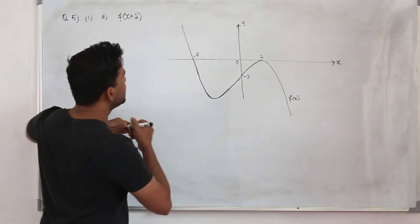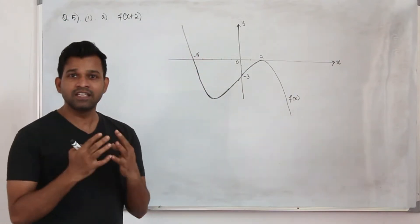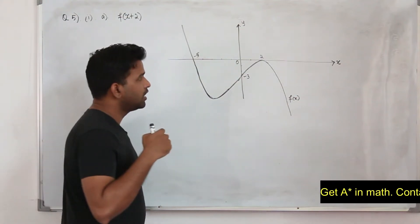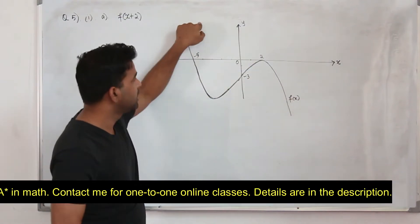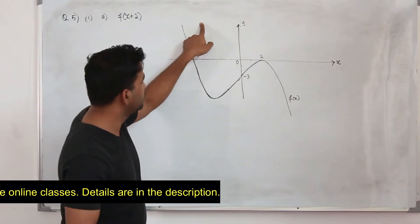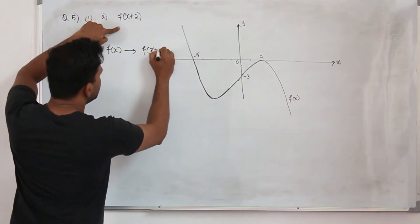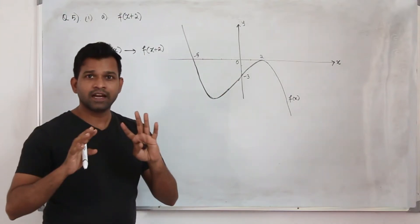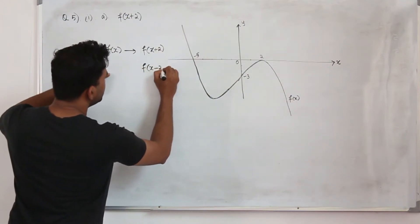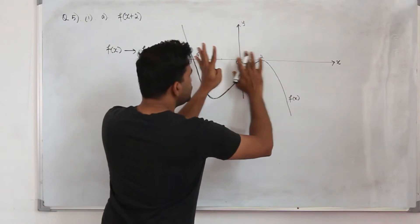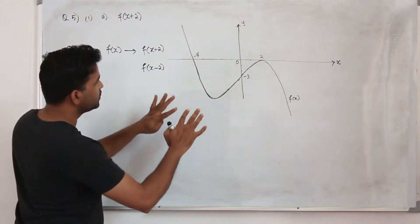You are given this cubic curve. In part A they want you to sketch f of x plus 2. This is f of x. If you learn transforming functions — this is a cubic graph, we know for sure this is a cubic function — in chapter 4, transformation, we know that if we replace f of x by f of x plus 2, it means you replace x by x plus 2, the graph will be translated to the left side 2 units. If it is f of x minus 2, the graph will be translated along the x-axis 2 units to the right. So the first one is the translation of the actual graph f of x to the left 2 units.